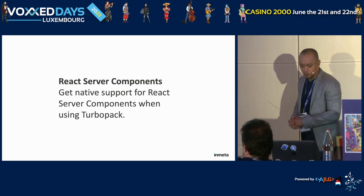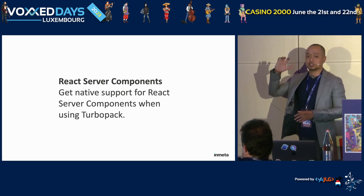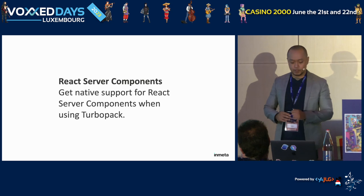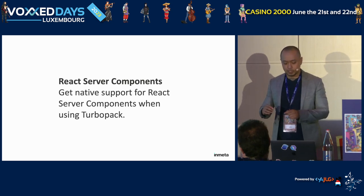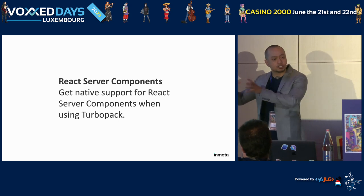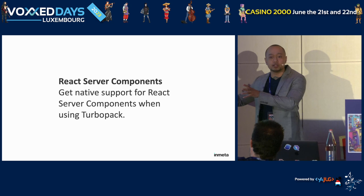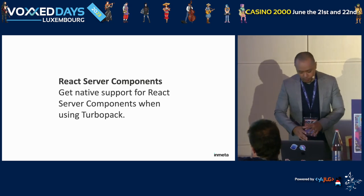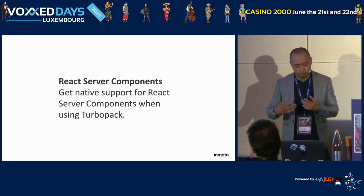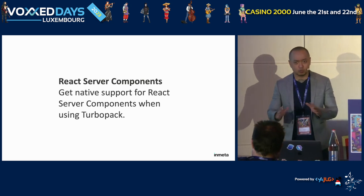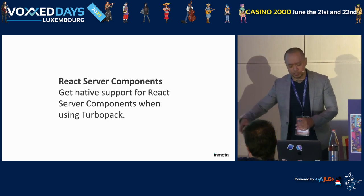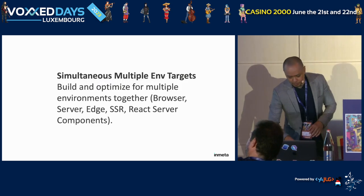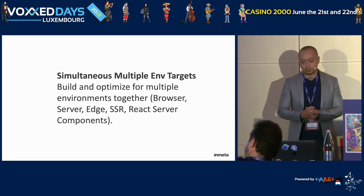Turbopack also supports React Server Components — React components that run on the server. This is fairly new in React 18 and really good. The point is you don't need to write a REST API anymore because the React component itself can query from the database using an ORM. It's a very good experience when writing applications — components querying directly from the database, just like PHP before.